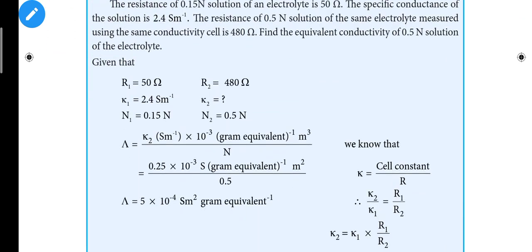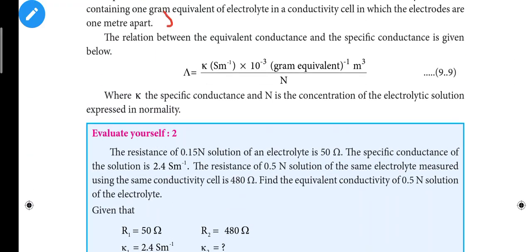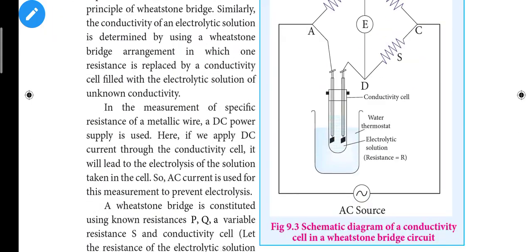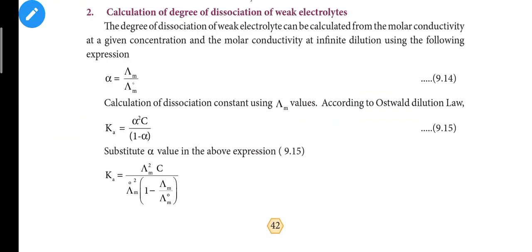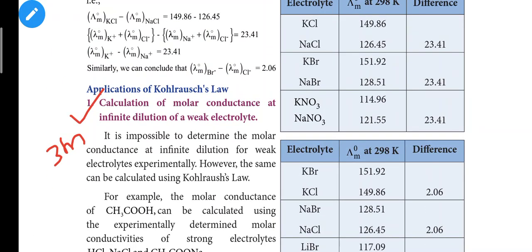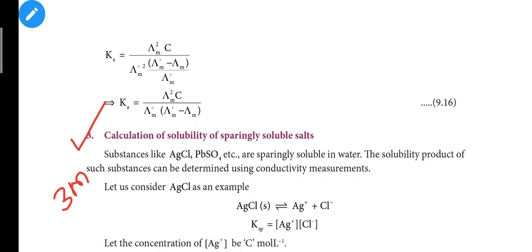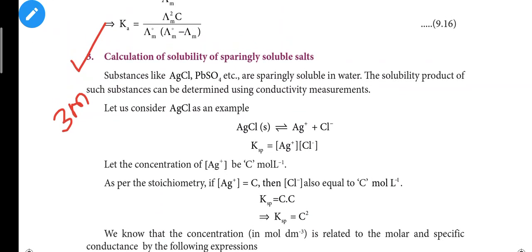Now for book inside questions: Page 37 discusses ionic conductance. The first three lines give the definition worth two marks. Next, page 42 covers applications of Kohlrausch's Law: calculation of molar conductance at infinite dilution of weak electrolytes. The third part discusses calculation of solubility of sparingly soluble salts - this question is important.